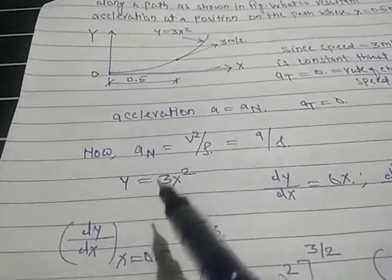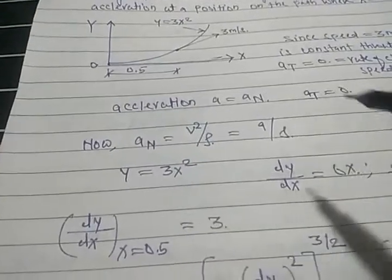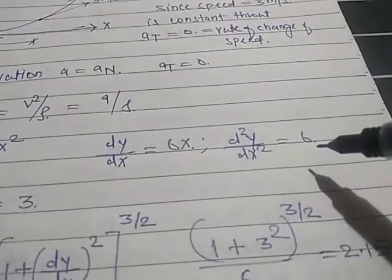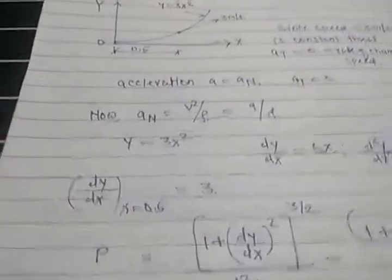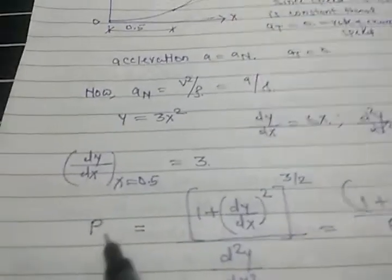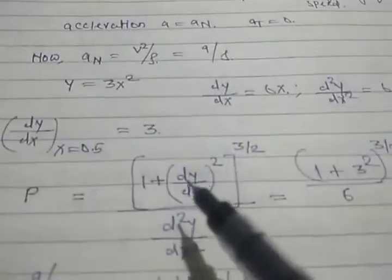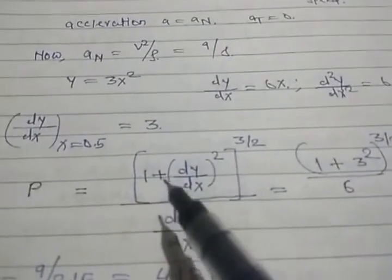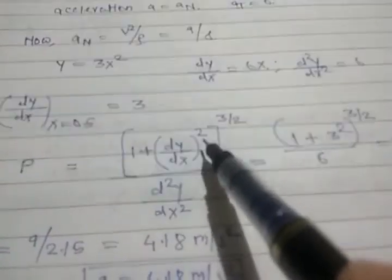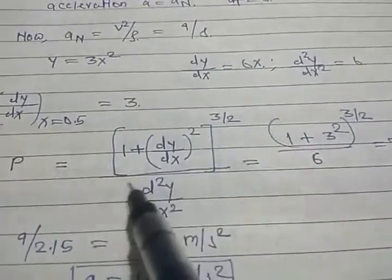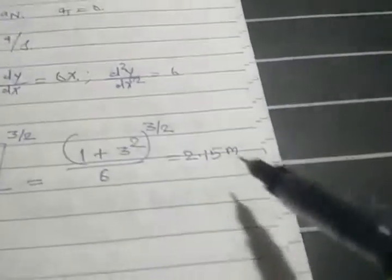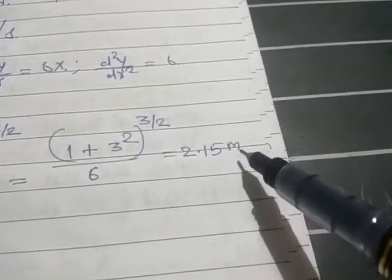To find ρ, we use y equals 3x². So dy/dx equals 6x, and d²y/dx² equals 6. At x equals 0.5, dy/dx equals 3. The formula is: ρ equals (1 + (dy/dx)²)^(3/2) divided by d²y/dx². This comes out to be 2.15 meters.